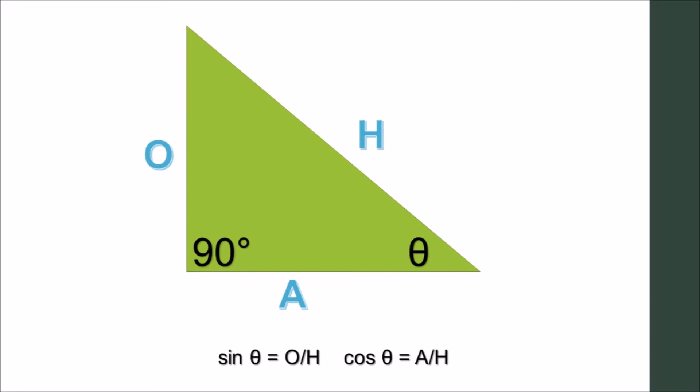Sine of theta equals O divided by H, opposite over hypotenuse. And cosine of theta equals A divided by H, adjacent over hypotenuse.